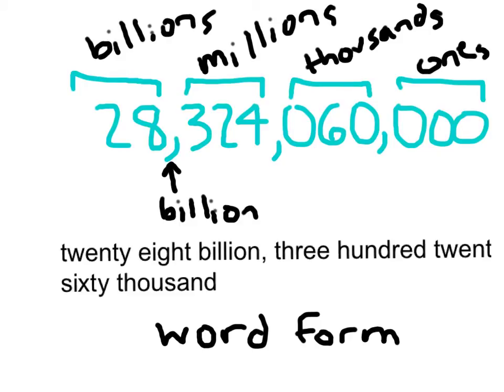You just have to write it all out: twenty-eight billion, three hundred twenty-four million, sixty thousand. And then so, this up here was the standard form, and this right here is what we call the word form. For this larger number, it's just what we read. Just have to write it, and that's why it's in words.